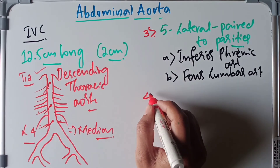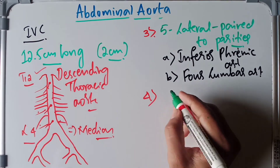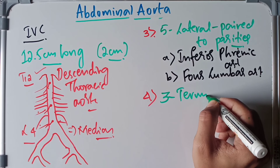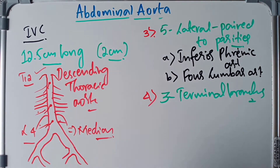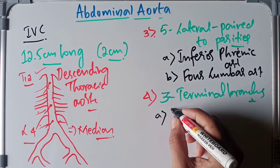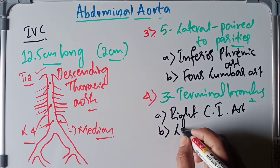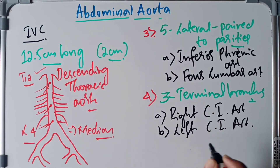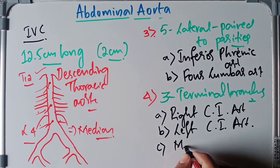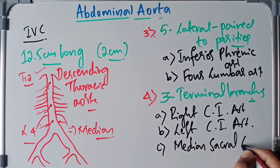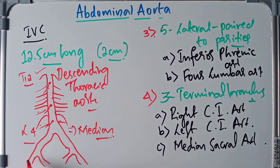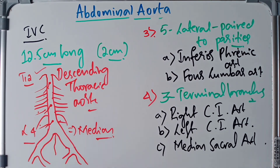Finally, the fourth division is the three terminal branches of the abdominal aorta. These are the right common iliac artery, the left common iliac artery, and the median sacral artery — a small branch. These are the four divisions under which we study the abdominal aorta.